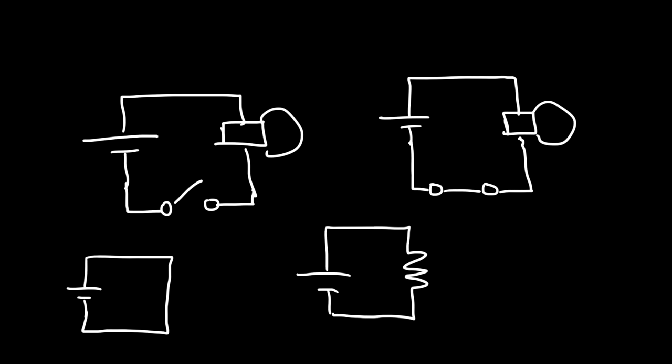Now there are four circuits, so one answer is going to apply to two circuits. The open circuit is the one that has an open switch. As you can see, there's a break in the circuit, and whenever there's a break in a circuit, no current will flow. So the current in this circuit is zero, which means the light bulb is not on.